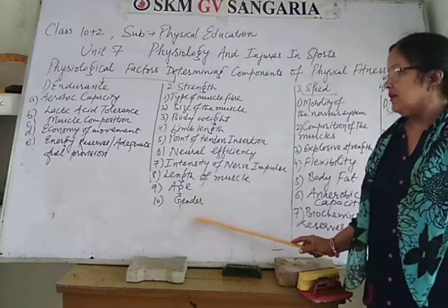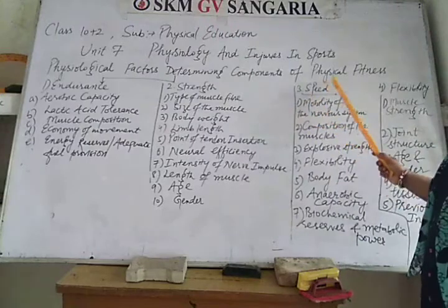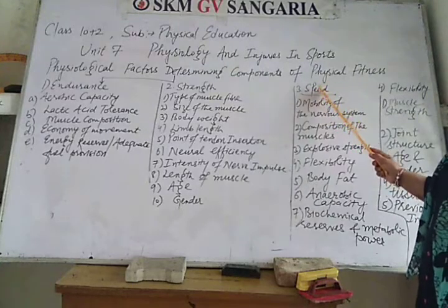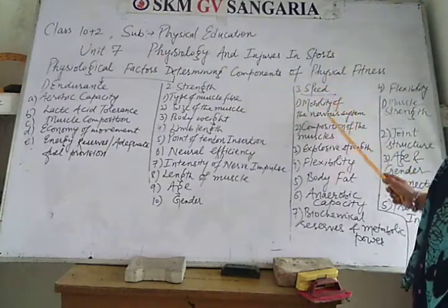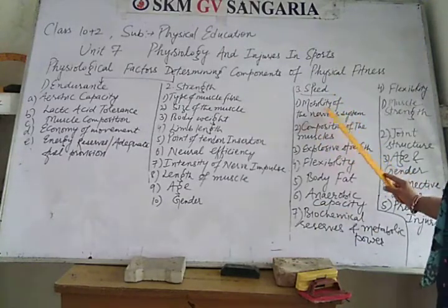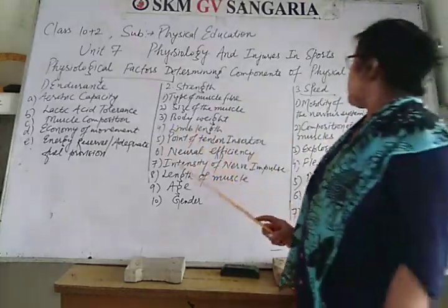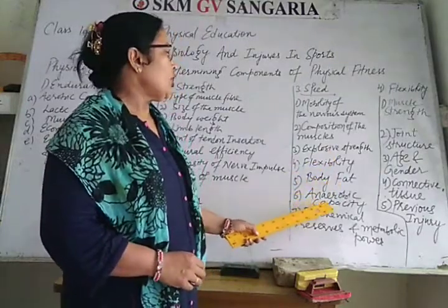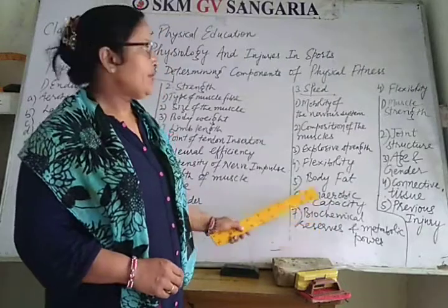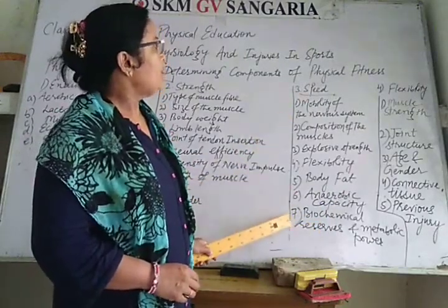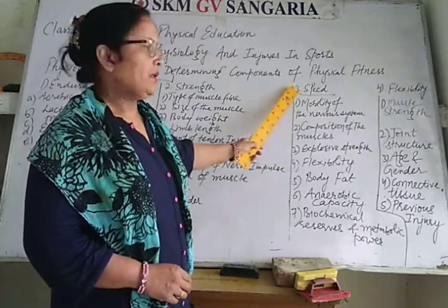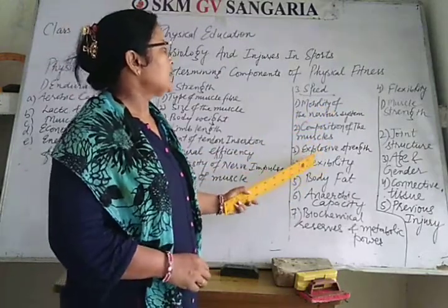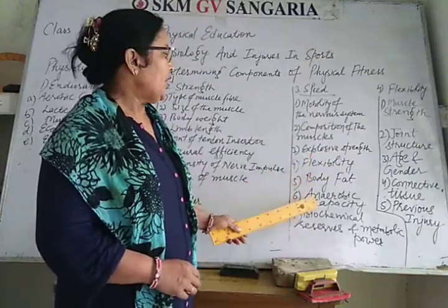Age and gender also determine strength. I have also taught you that these factors determine speed for physical fitness. Speed is determined by: mobility of nervous system, composition of the muscle, explosive strength, flexibility, body fat, aerobic capacity, biochemical results, and metabolic power.